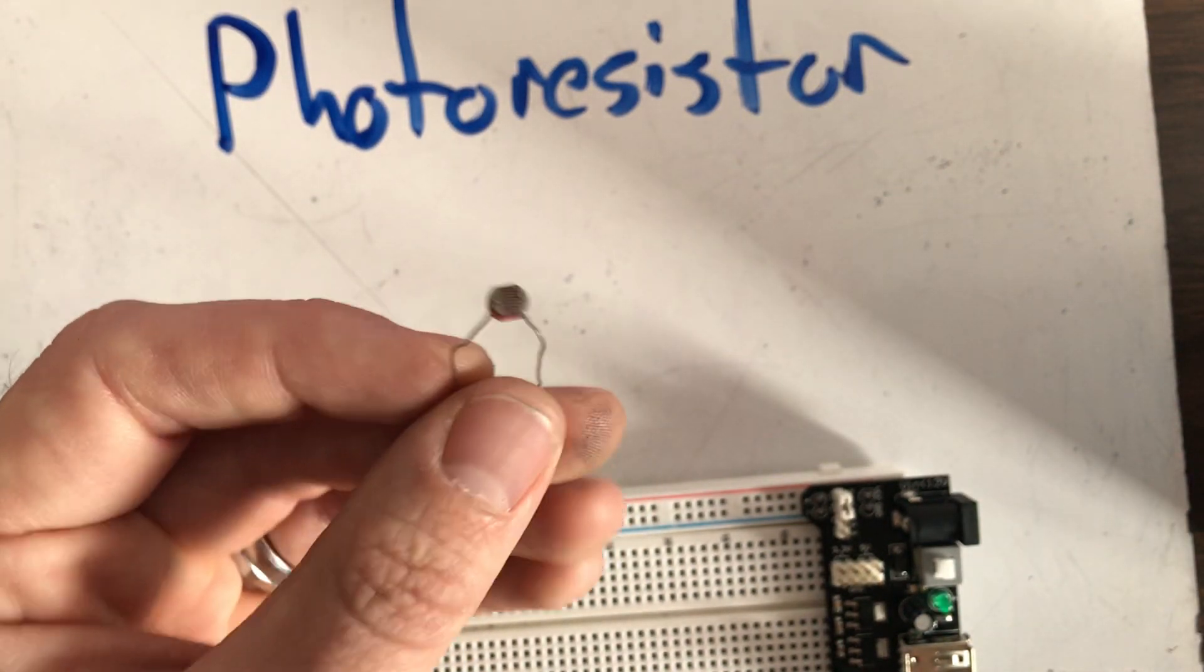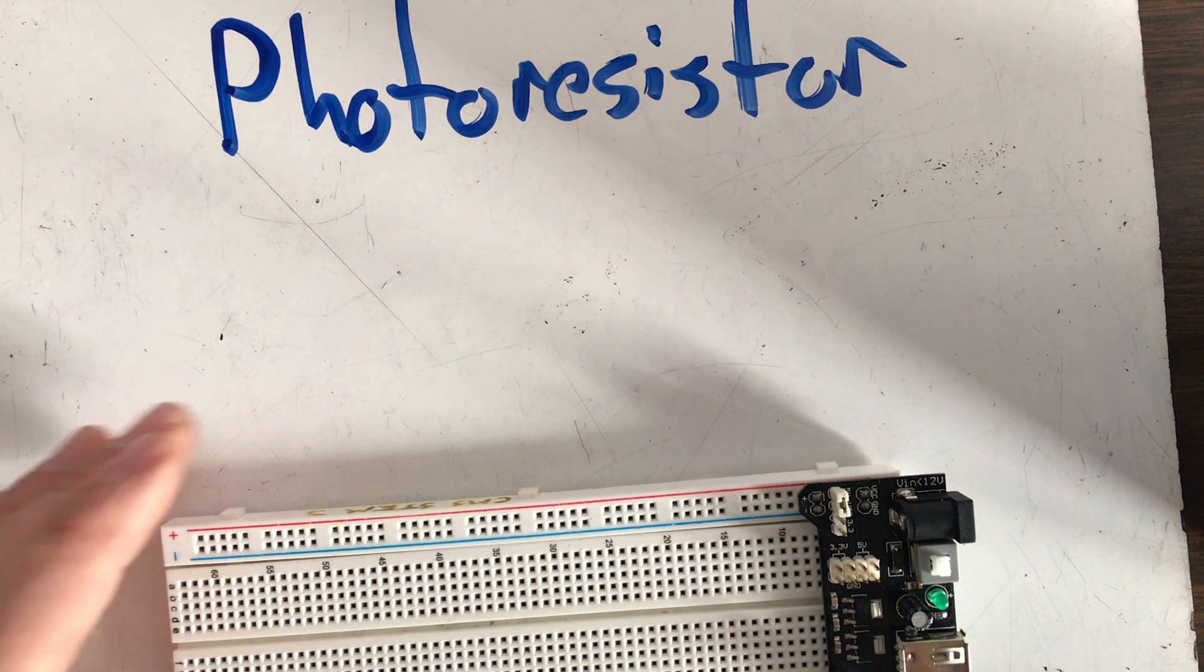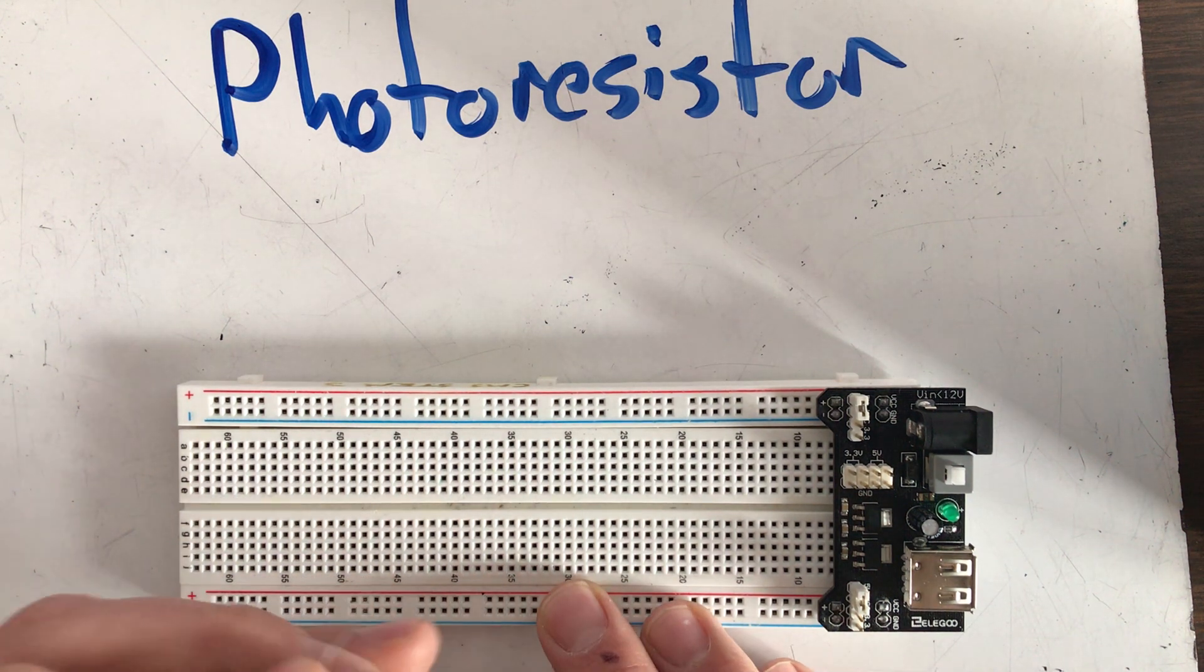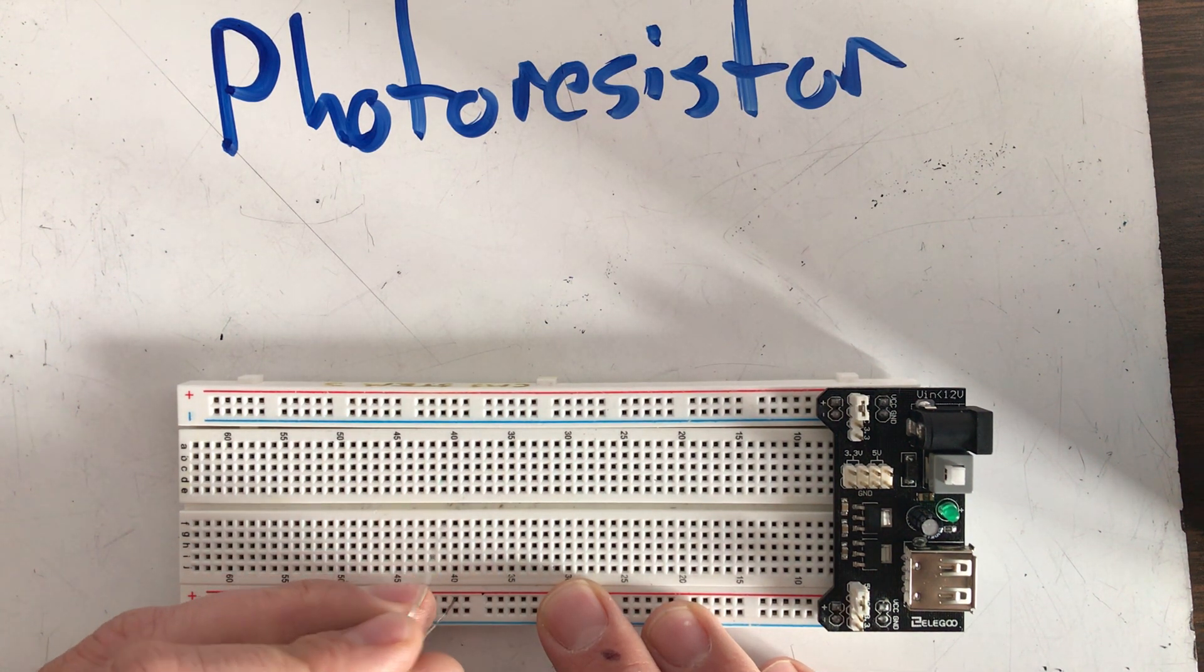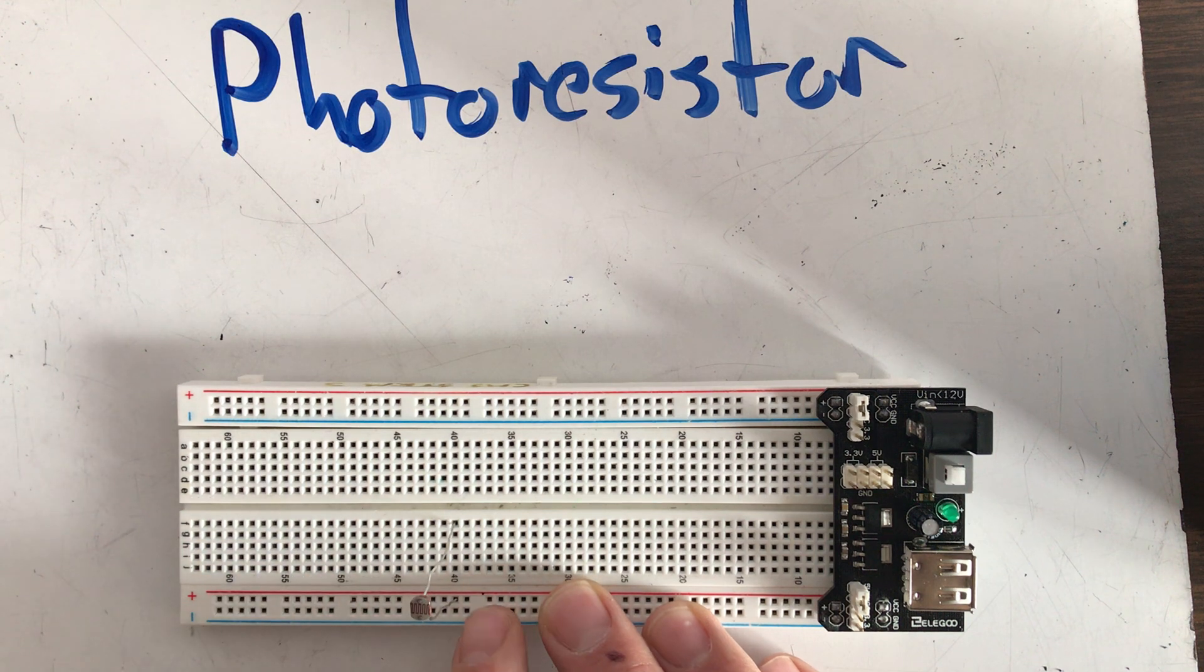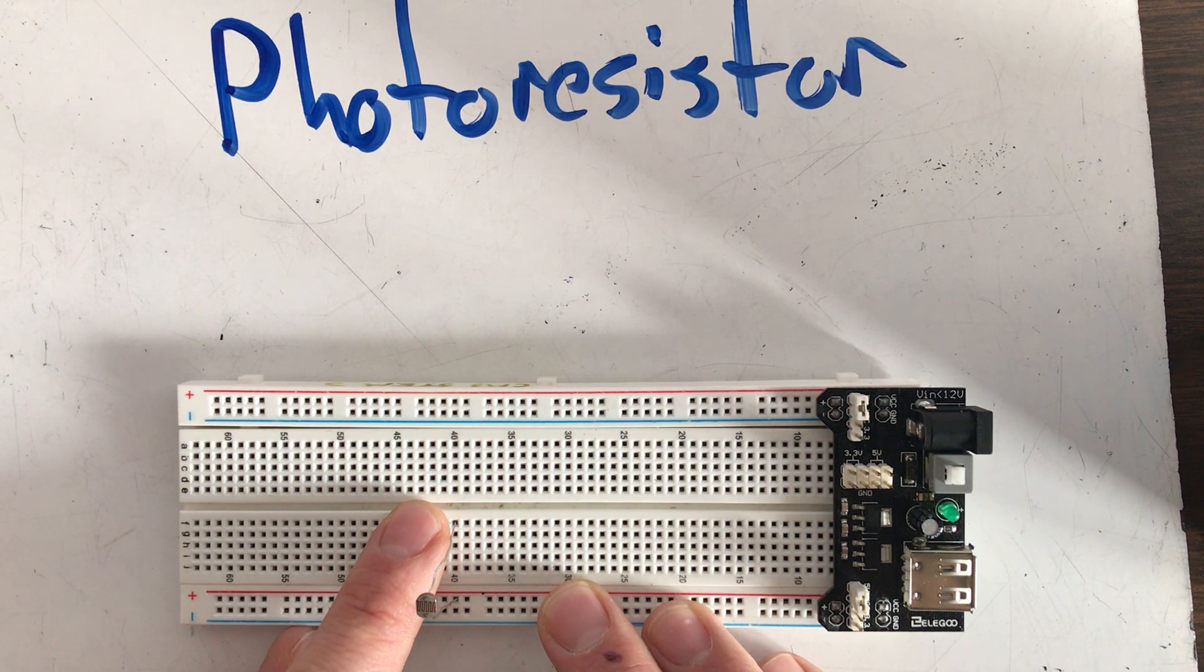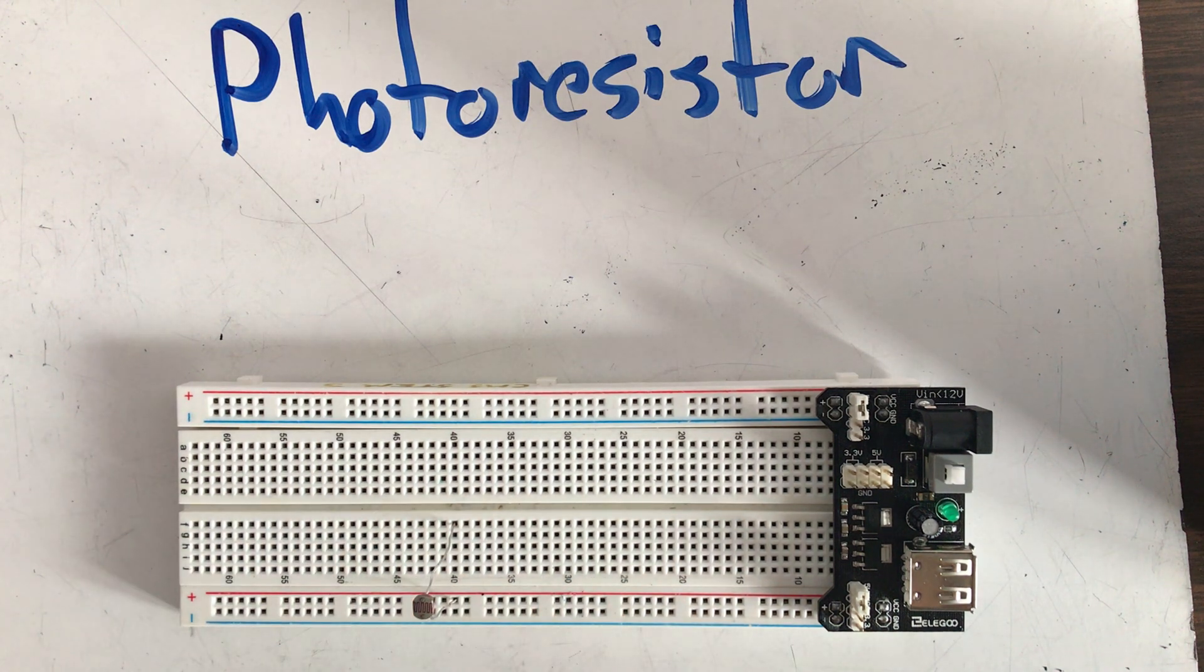So we're going to see this in play right now. Let's go ahead and get that wired up. Here's our breadboard. I'm going to hook up the photoresistor to the positive. You can see I got that into the positive, and then the other end of my photoresistor went right here into row 40 of my breadboard.